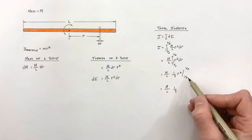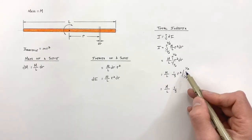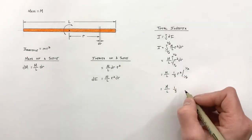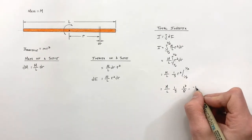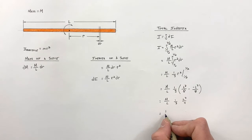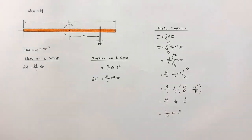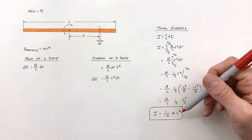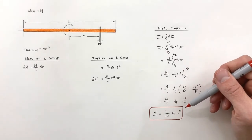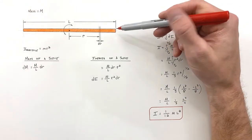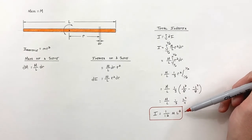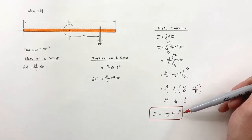Working out this integral — being careful with the distribution of the L/2 terms into the cube — we find that the rotational moment of inertia of a thin rod rotated around its center is (1/12)ML², where M is the mass and L is the total length of the rod.